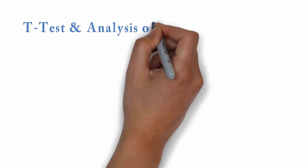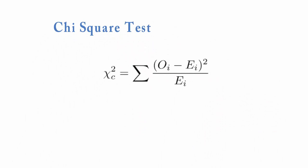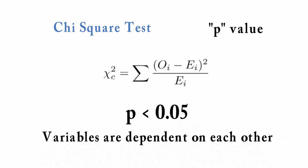T-test and analysis of variance, ANOVA, are used to determine if there is a significant difference between the means of two groups. The chi-square test is useful for testing the relationship between variables, the probability expressed as a p-value. We normally say if p is less than 0.05, the variables are dependent on each other and is not a random result.